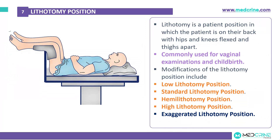Lithotomy position is whereby a patient lies on the back with hips and knees flexed and thighs spread apart. This position is commonly used for vaginal examinations and childbirth. Modifications include: low lithotomy position, standard lithotomy position, hemi lithotomy position, high lithotomy position, and an exaggerated lithotomy position.